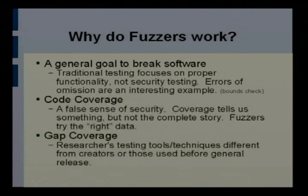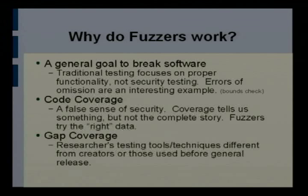Why do fuzzers work? There's a general goal of QA guys to do functional testing — does our program work as it's supposed to? Hackers were like: I don't care how this program works, I want to find a buffer overflow. That made two different approaches with two different results. Part of that is what I call gap coverage: even if a company bought a really expensive fuzzer that found 99 of 100 bugs, if I'm a hacker with a simple fuzzer that finds just one exploitable bug, that's all that matters.